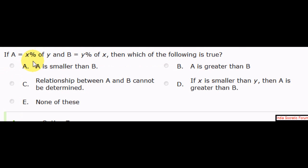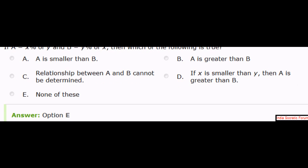A equals x percentage of y and B equals y percentage of x. Then which of the following is true? A is smaller than B. A is greater than B. Relationship between A and B cannot be determined. If x is smaller than y, then A is greater than B. None of the above. Now slowly study the equations, but we have less time. Still, we got to do it fast. Jump to the answer. The answer is option E, none of these. Why?